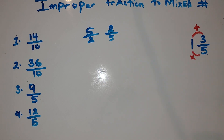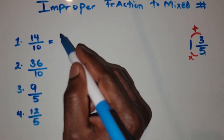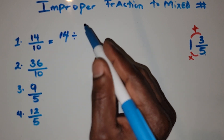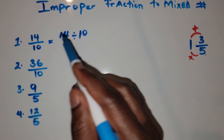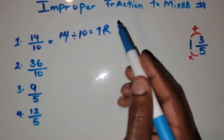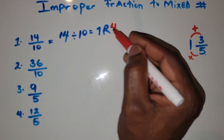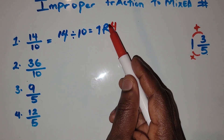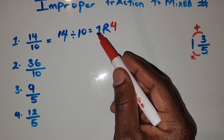The first step in converting an improper fraction is dividing the numerator by the denominator. So 14 divided by 10 — how many times does 10 go into 14? That's one time, with a remainder of 4.